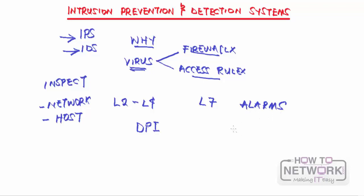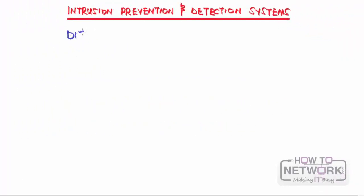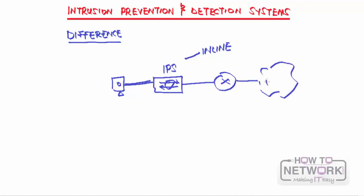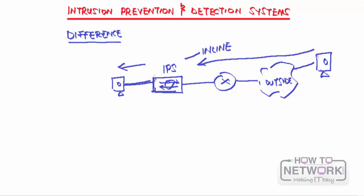They are purposely built to inspect traffic through a network, raise alarms when an attack is detected, and attempt to stop those attacks. The basic difference between an IPS and an IDS is in their placement. The IPS is placed inline in the traffic path — traffic going to an inside host passes through your IPS.